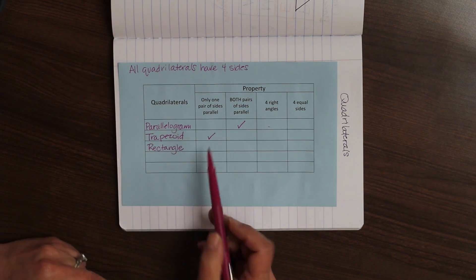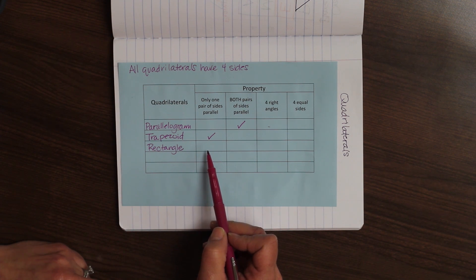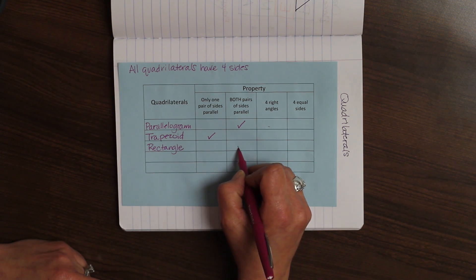The next thing that we're going to talk about is a rectangle. And let's see the properties of rectangle. Only one pair of sides is parallel? No. Both pairs are parallel. Yes.